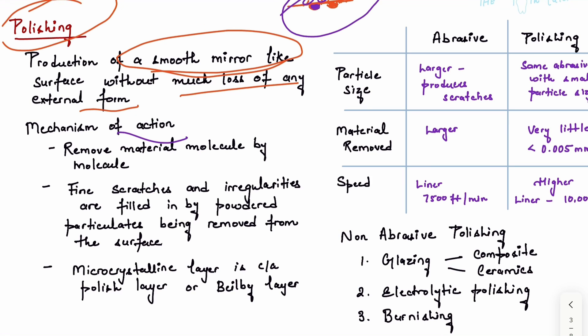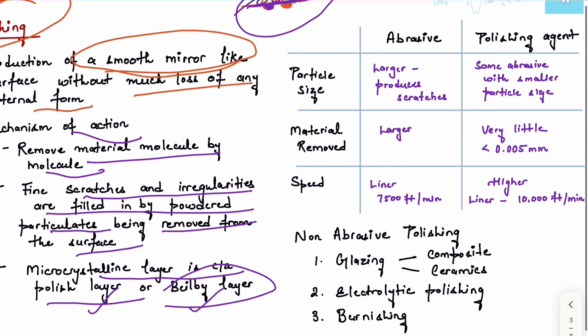What is the mechanism of action? It removes material molecule by molecule. Fine scratches and irregularities are filled by powdered particulates being removed from the surface. A microcrystalline layer called the polish layer or Beilby layer is formed.